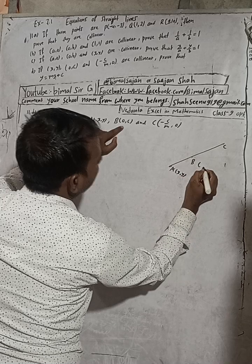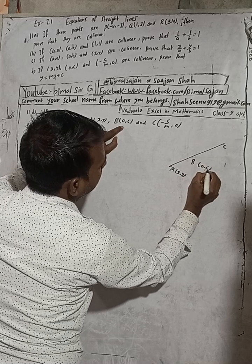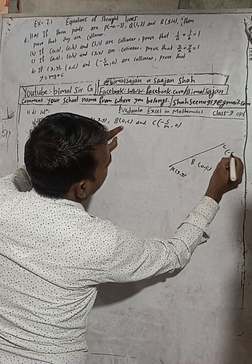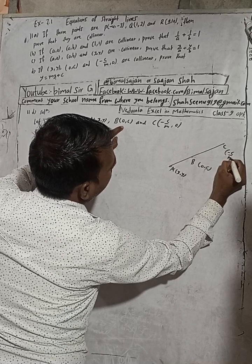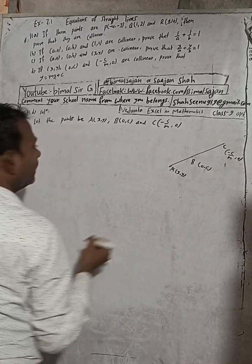So the given points are: A is (x, y), B is (0, c), and C is (-c/m, 0). Then we have to prove this equation.